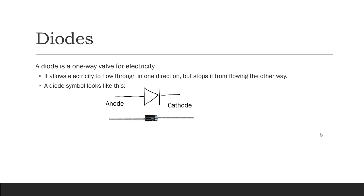The stripe side of a real diode corresponds to the cathode of a diode, and when you're looking at a diode, you can use that to remember which way it goes.